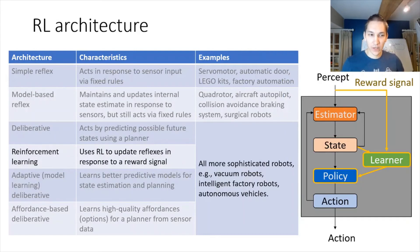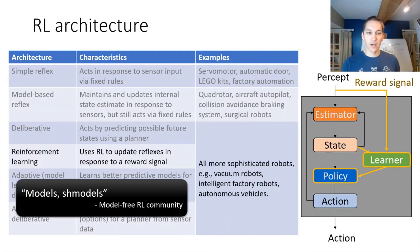In contrast, we have reinforcement learning architectures, which are gaining some popularity. Here, they're still like model-based reflex architectures, although they introduce a learning component to change the rules according to the observed state and also the reward signal. The rules are changed into what's known as a policy. The learner then updates the policy to try to seek better rewards. This philosophy of reinforcement learning is essentially model-schmodels. Let's not model anything about the world. Let's just try to change our rules to try to get better rewards.